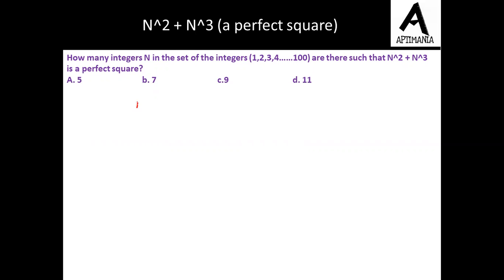So basically we need to substitute the value of n square plus n cube and we need to make sure that this value comes out to be a perfect square number. Now a very easy way to solve this question is we can simply take out n square common from these two. So we will be left with 1 plus n.